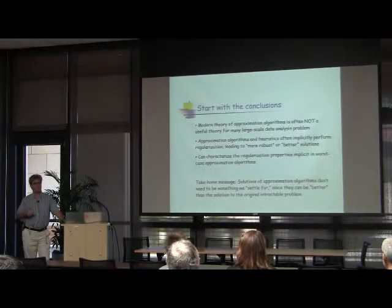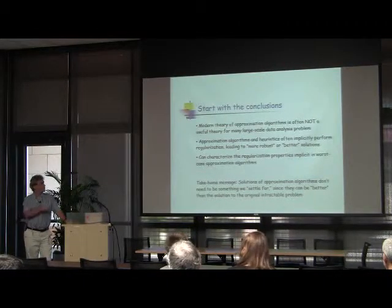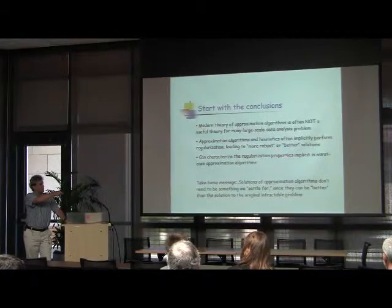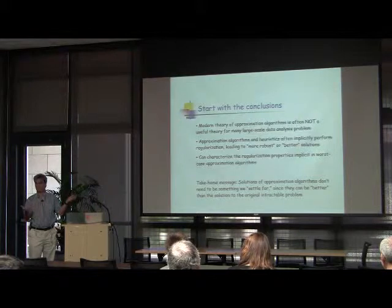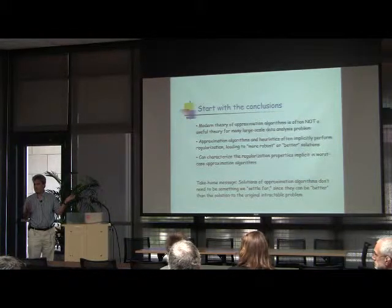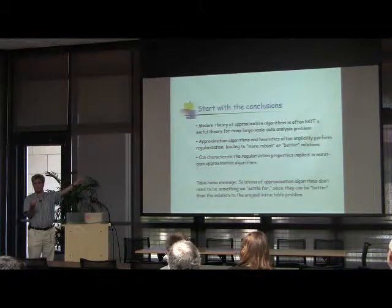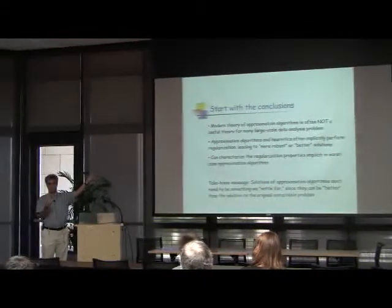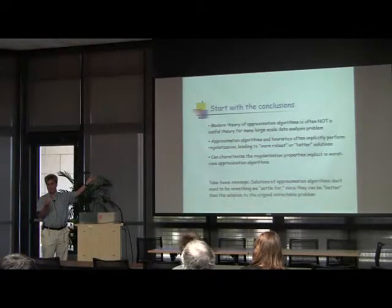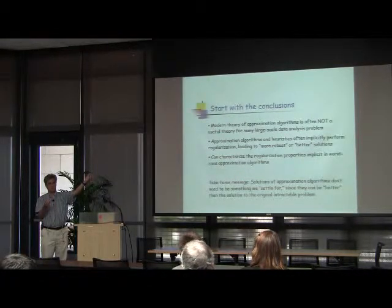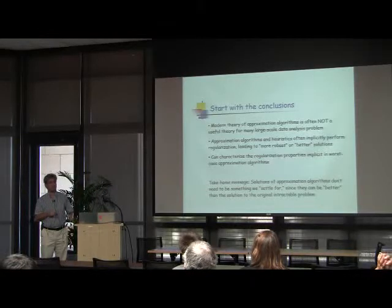So one question is: if we think about large-scale applications, when we run an algorithm we're actually doing something. Can we characterize what we're doing? Can we characterize the regularization properties implicit in worst-case algorithms? The usual perspective is: I want to compute this intractable thing, so I'm going to settle for the output of an approximation algorithm, and this thing is good insofar as it approximates the original. But rather than just saying I computed something that approximates this, can you say in fact I exactly optimized something else — in particular, a regularized version of this?